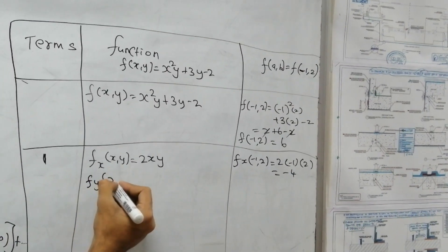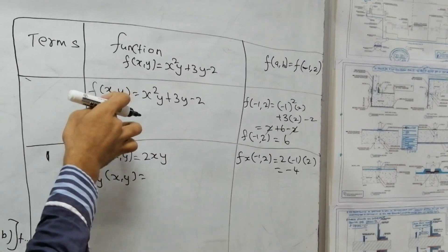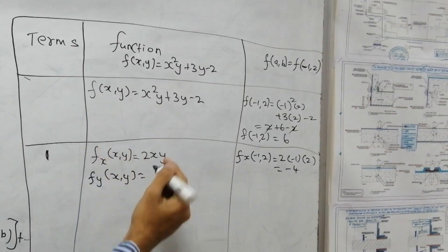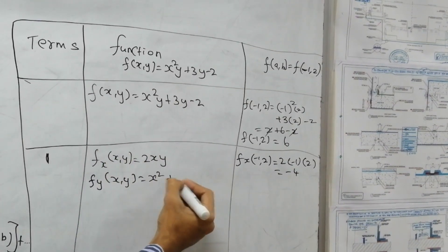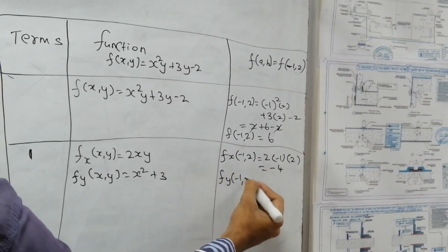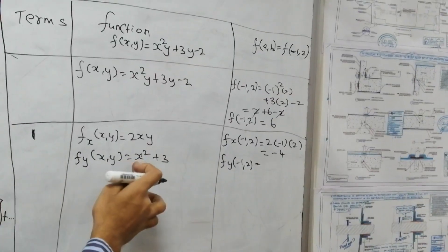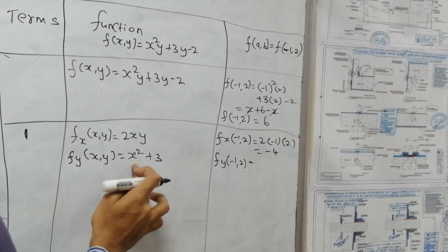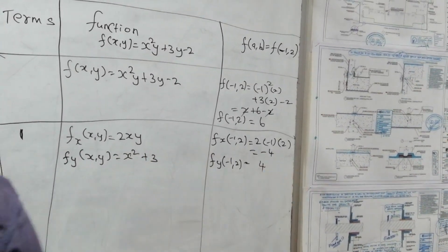Now we find the partial derivatives. Treating y as constant: fx equals 2xy. At (minus 1, 2): fx(minus 1, 2) equals 2 times minus 1 times 2 equals minus 4. Then fy equals x squared plus 3. At (minus 1, 2): fy equals 1 plus 3 equals 4.